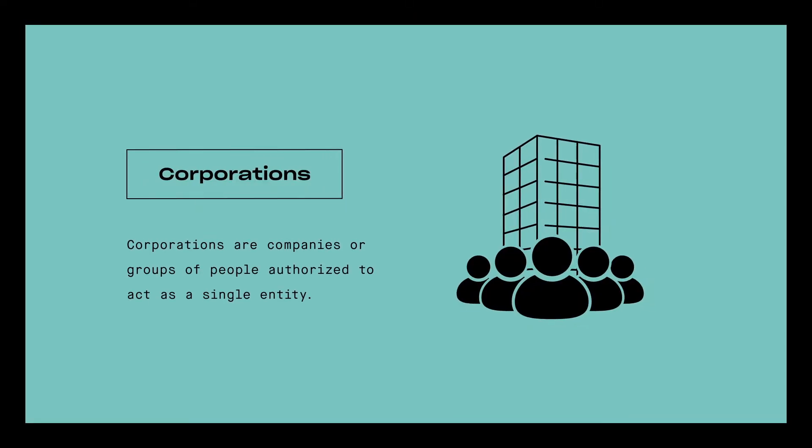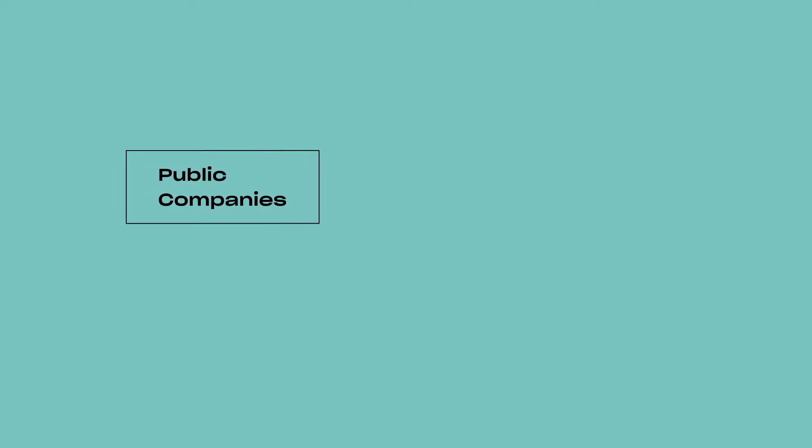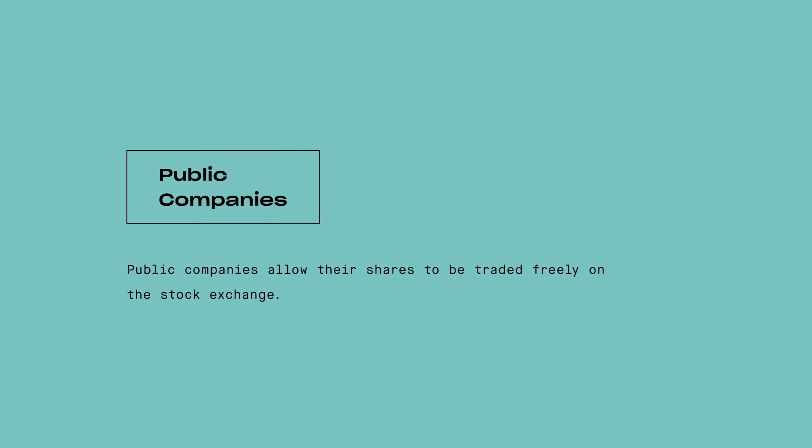Corporations are the fourth kind of private sector entity, the only one that isn't linked to a particular person. Legally speaking, a corporation is itself a person, because it can enter contracts. You should note that there are both privately held and publicly held corporations. Privately held companies rely on a select few investors to raise funding, and you can't buy their shares on the stock market — because of this, they retain greater organizational control. Once a company decides to sell its shares on the open market, it becomes a publicly traded company, subject to certain rules about financial transparency. The company can now sell shares to raise cash for projects, but it's also under a lot of pressure to perform well and keep its stock price up.